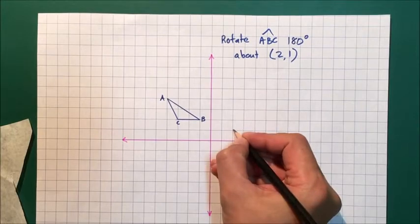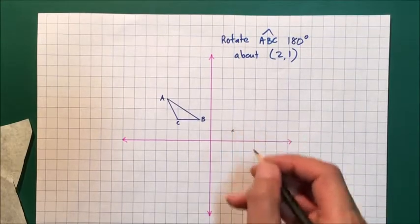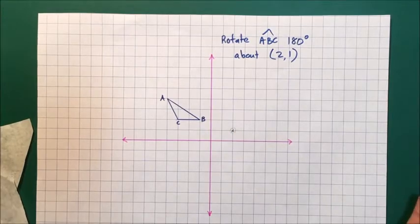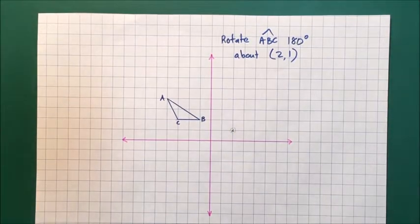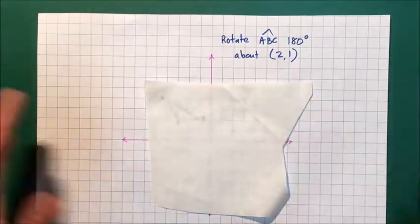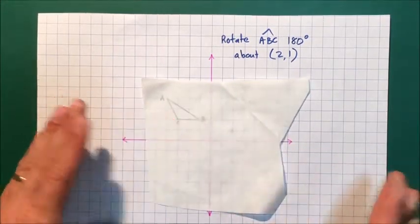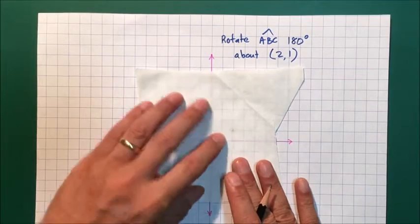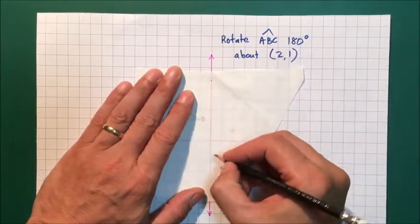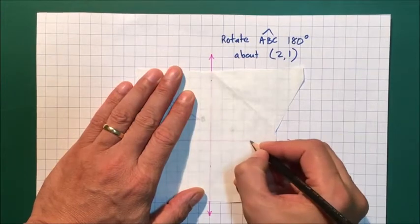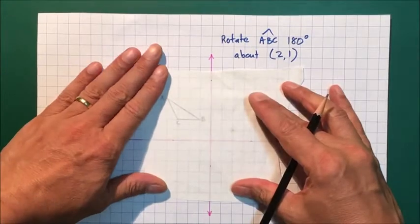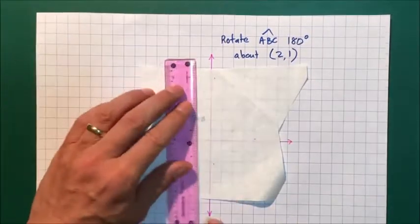Next thing is let's go about the business of rotating this shape. What I like to do is get tracing paper, and on this tracing paper I like to draw my own set of axes. So make those little dashes.